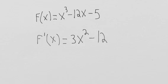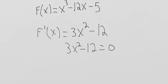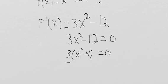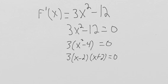We set the derivative equal to 0 because a slope of 0 means a flat slope, which means we're at a peak or a valley. So with 3x² - 12 = 0, we factor out a 3 to get 3(x² - 4) = 0, then factor further to get 3(x - 2)(x + 2) = 0. So the derivative equals 0 at x = 2 and x = -2.